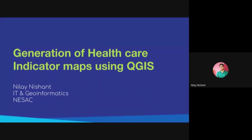Along with the healthcare indicator maps, he will also go through the basics of QGIS. Initially the plan was to focus on the healthcare indicator, which is more of a GIS-based problem statement. But after seeing comments from people interested in loading remote sensing datasets onto QGIS, he will give a brief introduction using Indian remote sensing datasets like AVIS and how to calculate some basic indices, then proceed to the problem statement.